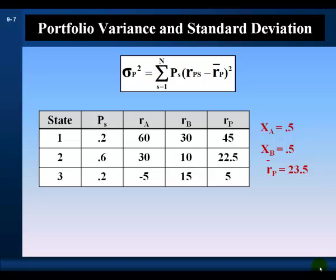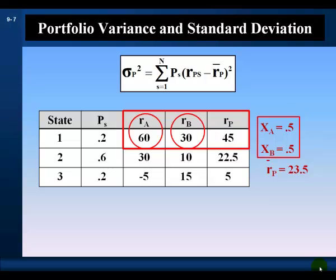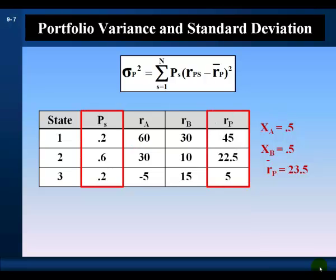Portfolio variance can be calculated using state-contingent returns. The state-contingent return of a portfolio is a weighted average of the state-contingent returns of the securities making up the portfolio. Given the probability distributions of securities A and B and their portfolio weights, we can calculate the state-contingent returns of the portfolio. In state 1, we weight the state-contingent returns of securities A and B by their portfolio weights of 0.5 each, and sum to get the portfolio's return in state 1. We do this for all states, giving us the probability distribution for the portfolio.